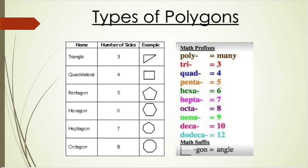Types of polygons: depending upon the number of sides, polygons are classified. If the polygon has three sides, it is called a triangle. Four sides — quadrilateral. Five sides — pentagon. Six sides — hexagon. Seven sides — heptagon. Eight sides — octagon. The word 'poly' means many, and 'gon' means angle, so a figure which has many angles is called a polygon.